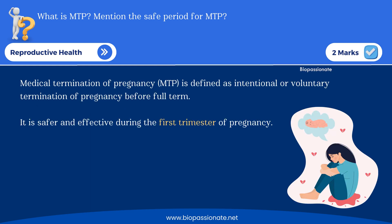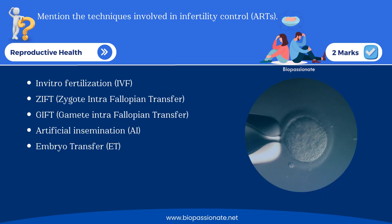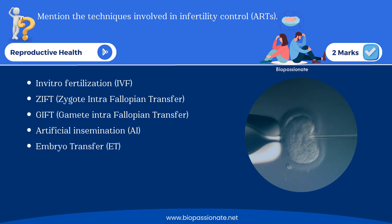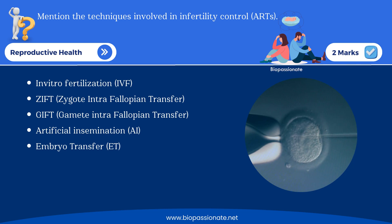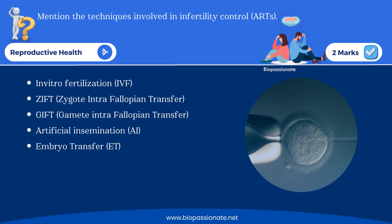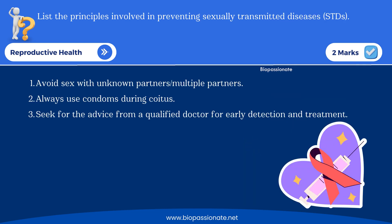Another frequently asked question: what is MTP (medical termination of pregnancy) — mention the safe period for MTP. Also: mention the techniques involved in infertility control, which indirectly asks about ART methods: in vitro fertilization (IVF), zygote intra-fallopian transfer (ZIFT), gamete intra-fallopian transfer (GIFT), artificial insemination, and embryo transfer. There is also a two-mark question: list the principles involved in preventing sexually transmitted diseases.